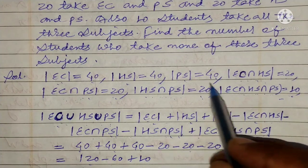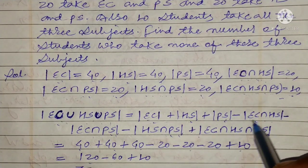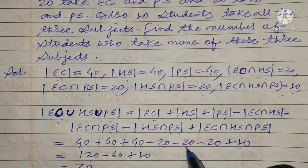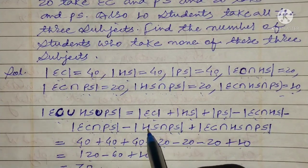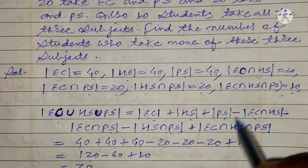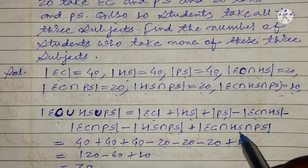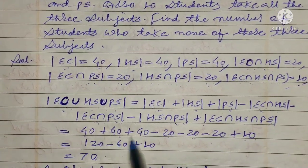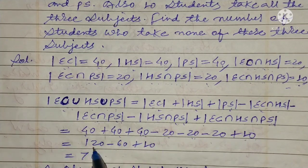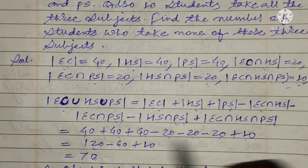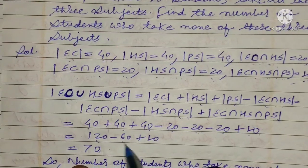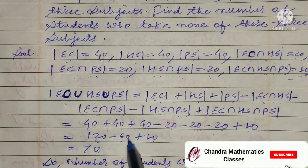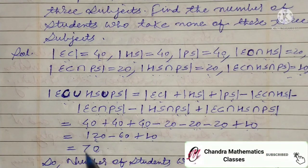Number of PS is 40. Number of EC intersection HS is 20. Number of EC intersection PS is 20. Number of HS intersection PS is 20. Number of EC intersection HS intersection PS is 10. So: 40 plus 40 plus 40 equals 120, minus 20 minus 20 minus 20, plus 10. That gives 120 minus 60 plus 10, which equals 70.